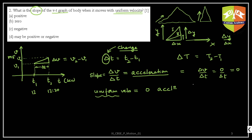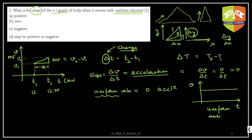Slope zero means there is no rise in the vertical direction as you move in the horizontal direction — it's a flat, uniform plane. So if you draw the v-t graph with time on the x-axis and velocity on the y-axis, a zero-slope line represents uniform motion or constant velocity — same speed, same direction.